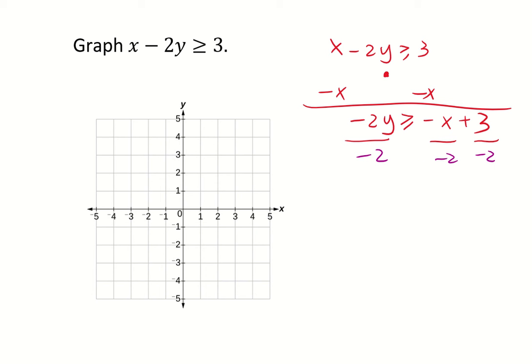So since we're dividing a negative number, the inequality sign needs to change to the other direction. So greater than or equal to becomes less than or equal to because we're dividing by a negative number. If you divide by a positive number, the sign won't change the direction.